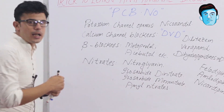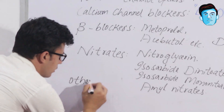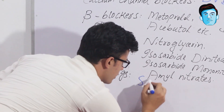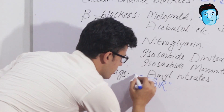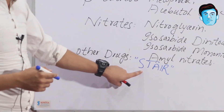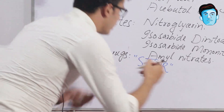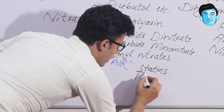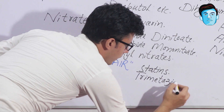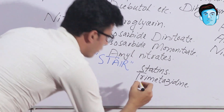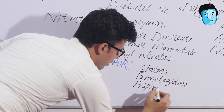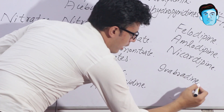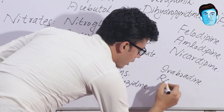O stands for Other drugs. For the other drugs, we have another mnemonic: STAIR. S stands for Statins, T stands for Trimetazidine, A stands for Aspirin, I stands for Ivabradine, and R stands for Ranolazine.